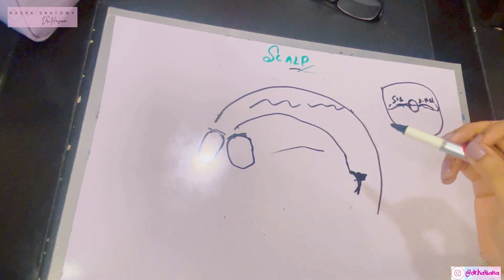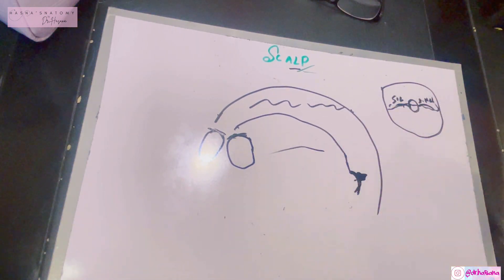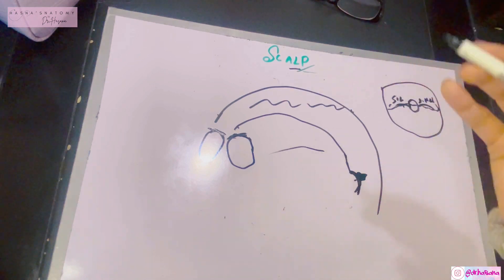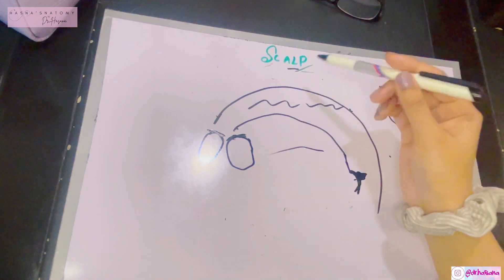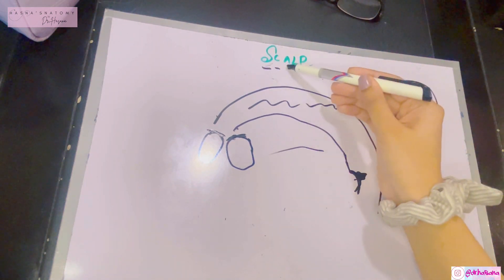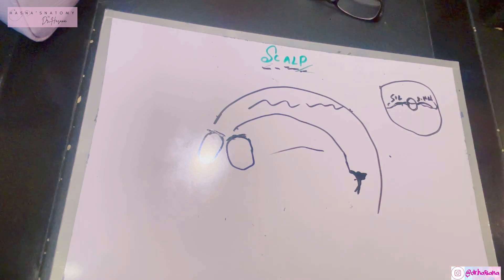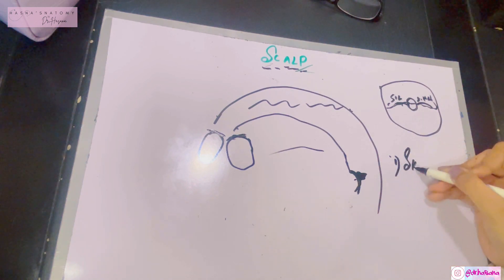So coming from the supraorbital margin, going posteriorly to the external occipital protuberance along with the superior nuchal lines is the extent of the scalp. On either side, the boundary is the superior temporal lines. Now we need to know the layers of the scalp — the best part is that its layers are in its name.